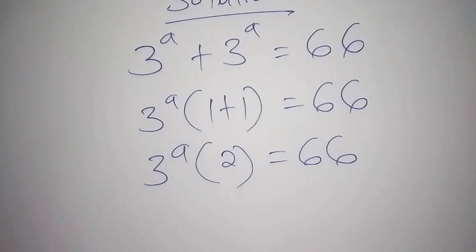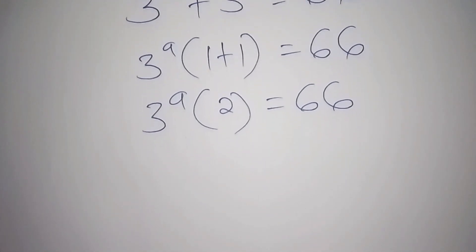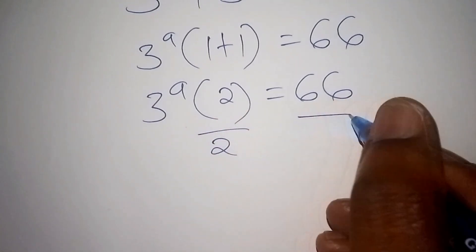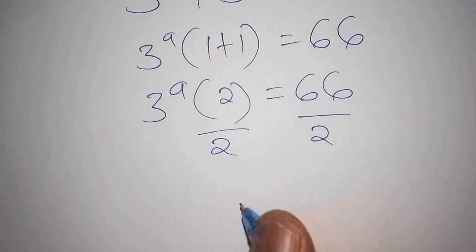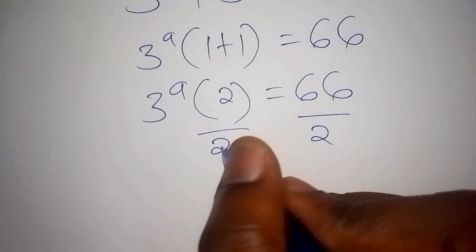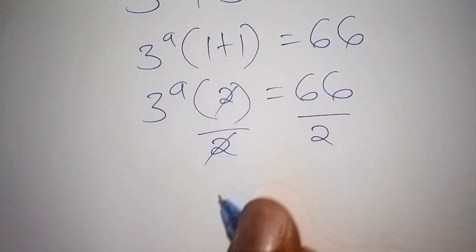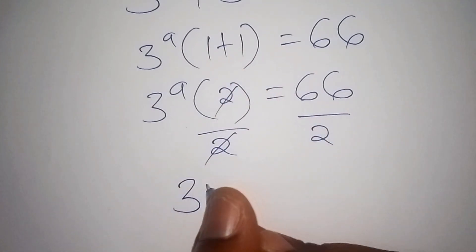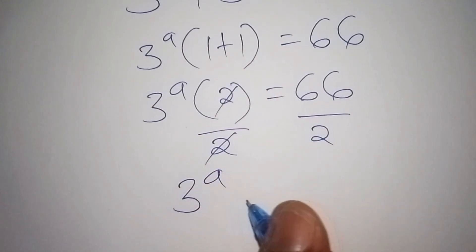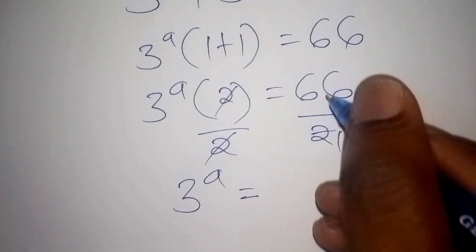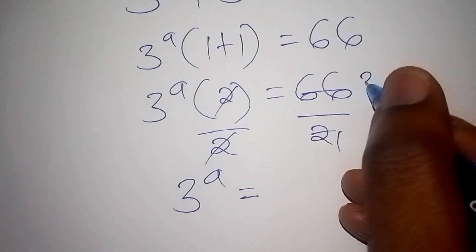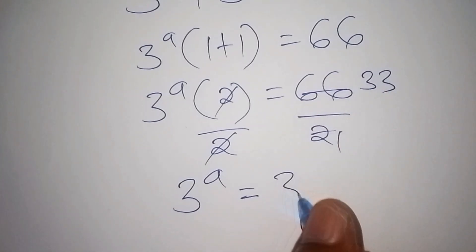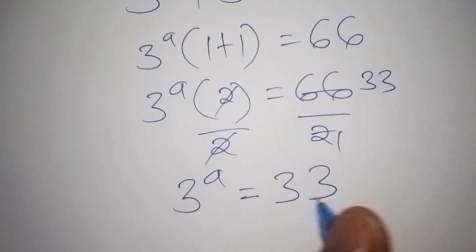From there, we shall divide both sides by 2. The 2s cancel, and we remain with 3 to the power of a equals 33.